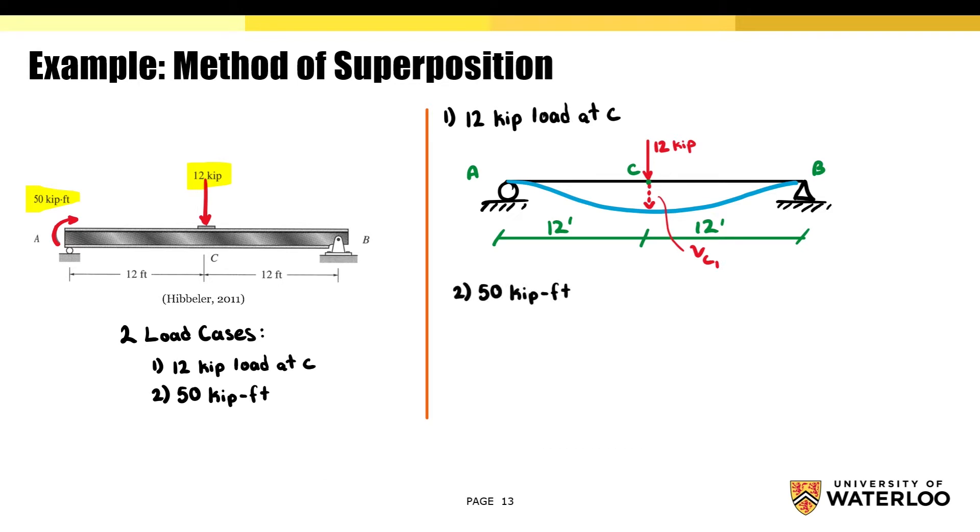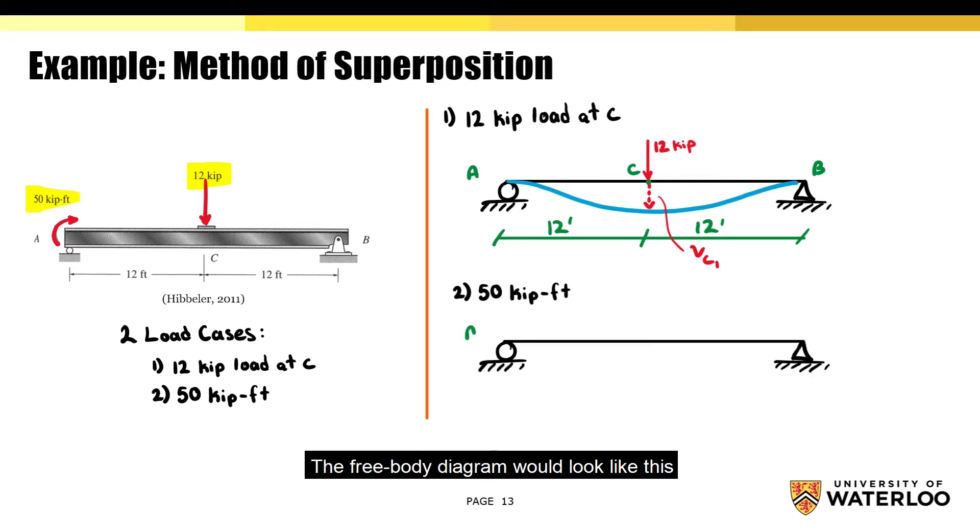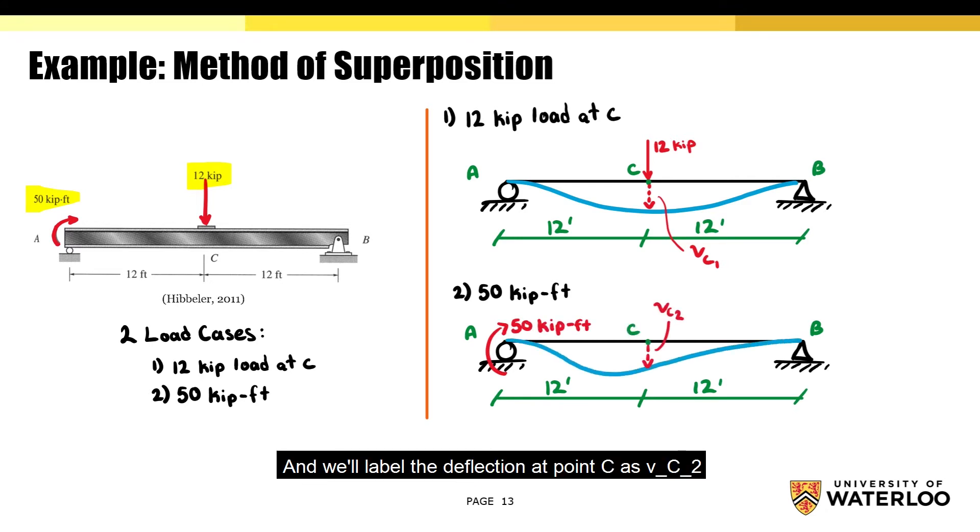Now we'll move on to the second load. The free body diagram will look like this. If we apply the moment at point A, the elastic curve will look like this. And we'll label the deflection at point C as VC2.